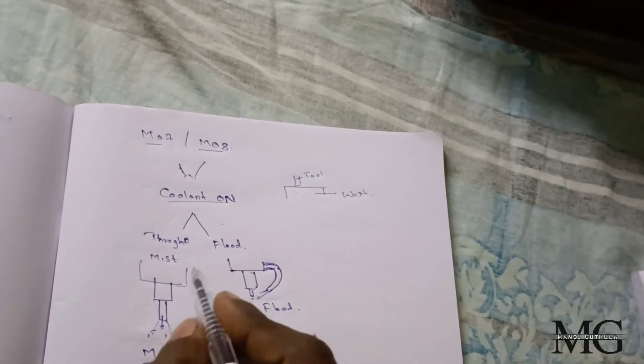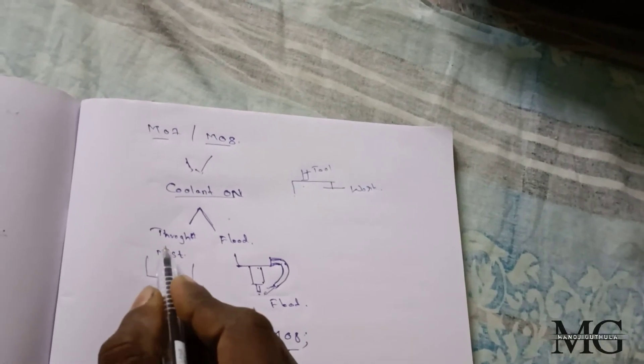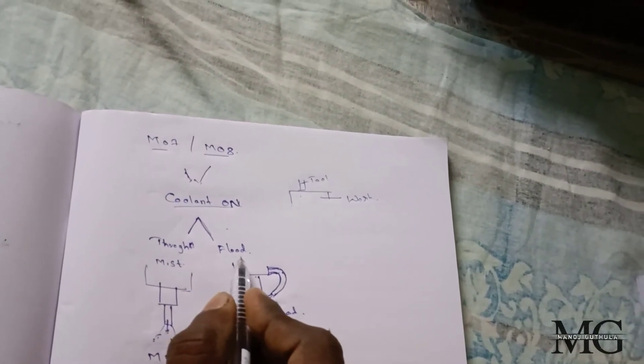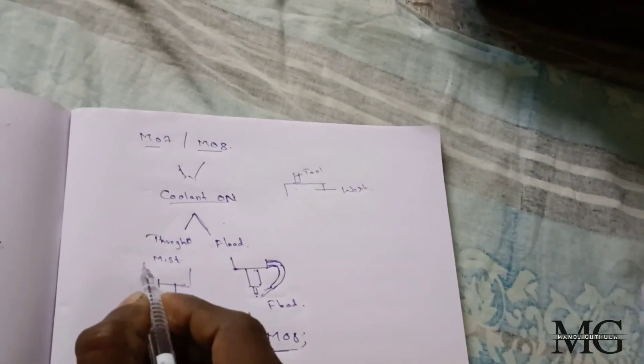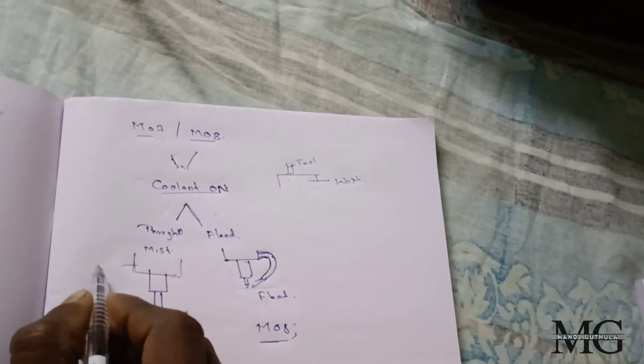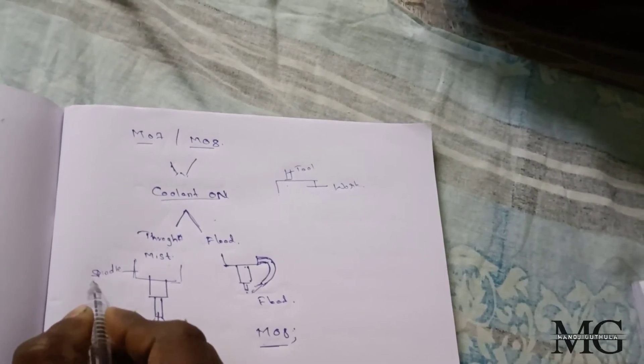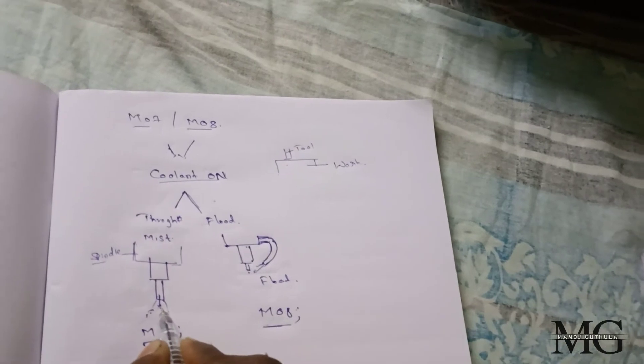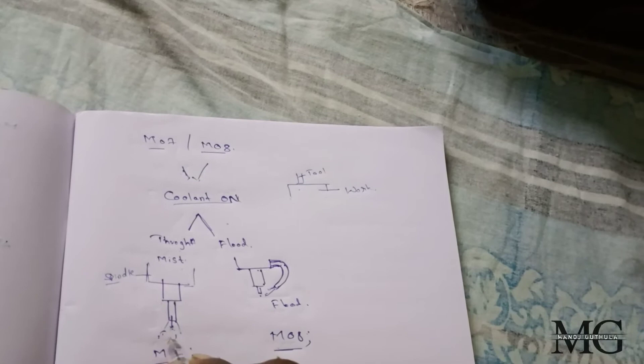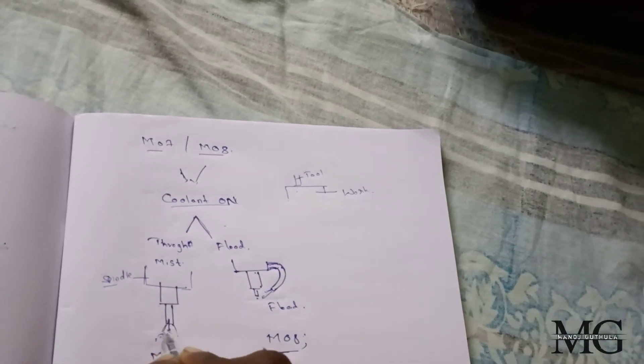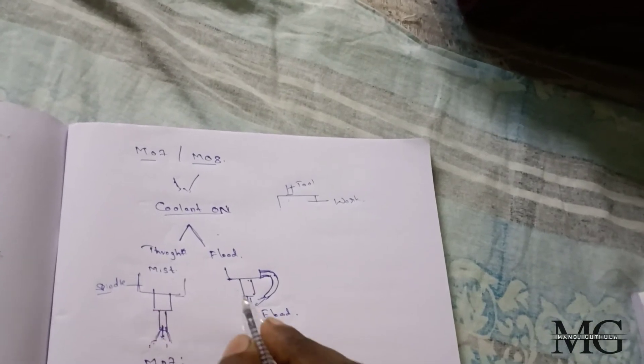There are coolant comes in two ways. One, through coolant, and other is flood. Through coolant, also known as mist. It is spindle. Tool is clamped to the spindle. The tool contains holes inside. From inside the tool, the coolant comes from inside the tool. It is known to be through coolant.